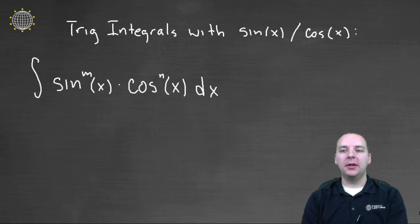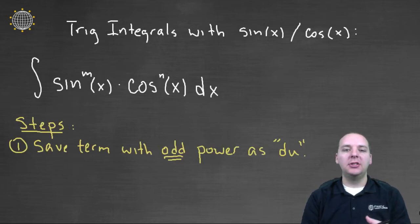So if we have this, you'll recall our general concept, our general idea is to save one of these guys. Save a single term of sine or cosine and save it to the end. And that's going to be your du.